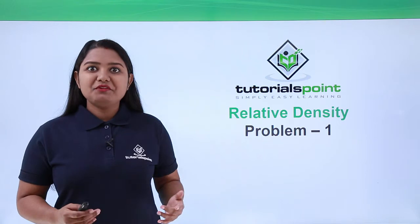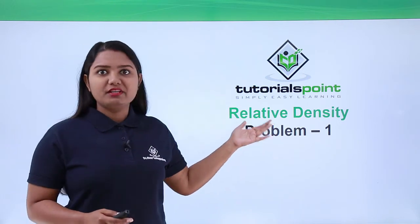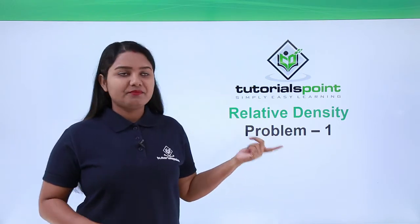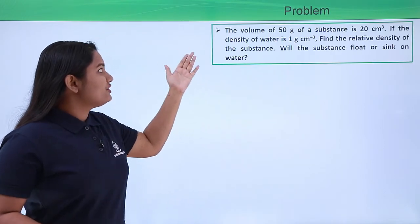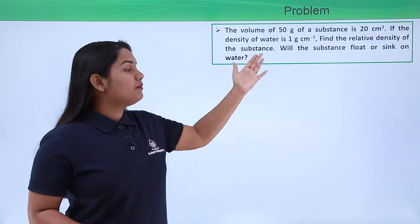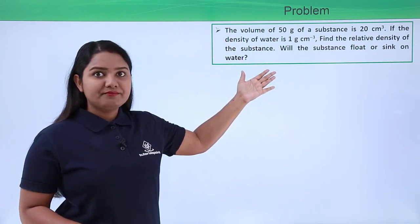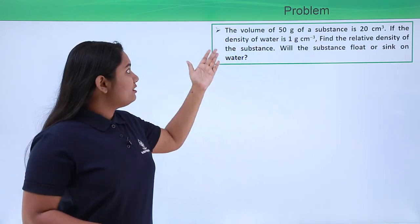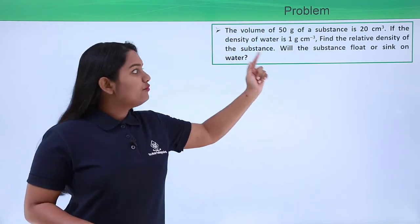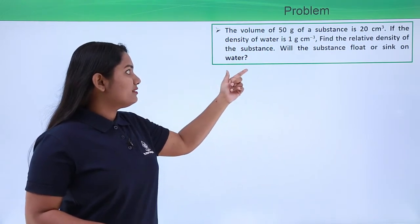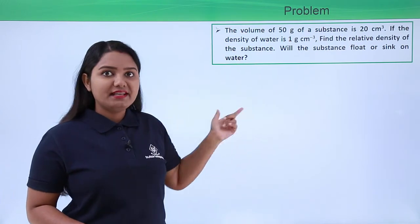Hello everyone. In this video we are going to solve a problem which is based on the concept of relative density. Here is the problem which reads: the volume of 50 grams of a substance is 20 centimeter cube. If the density of water is 1 gram per centimeter cube, find the relative density of the substance. Will the substance float or sink in water?